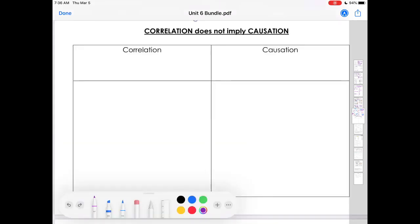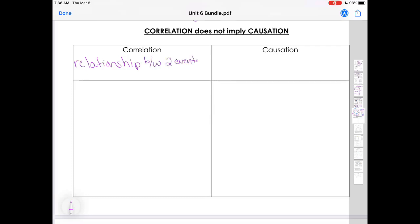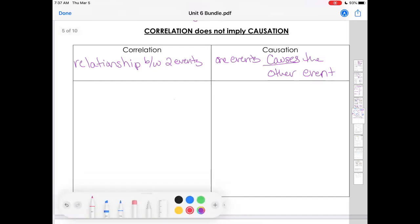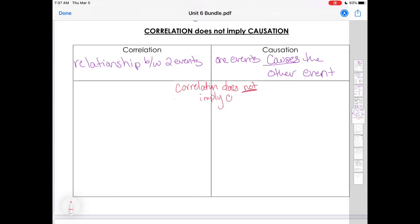Then we have this thing called correlation versus causation. Correlation is a relationship between two events, and causation is that one of the events causes the other. One thing we do need to remember is that correlation does not imply causation. Just because things are correlated doesn't mean that they are caused by the other one.